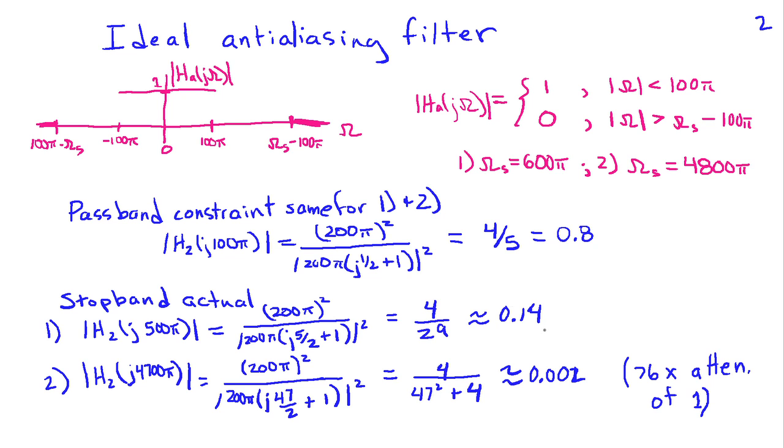Now on the other hand, if we have the 8 times oversampling using the same filter, aliasing can't occur until we get to 4700π. And in this case, the gain, doing the complex math to find out the gain at 4700π, we find that it's about 0.002. So by using 8 times oversampling, the same analog filter achieves 76 times as great of attenuation as without oversampling.